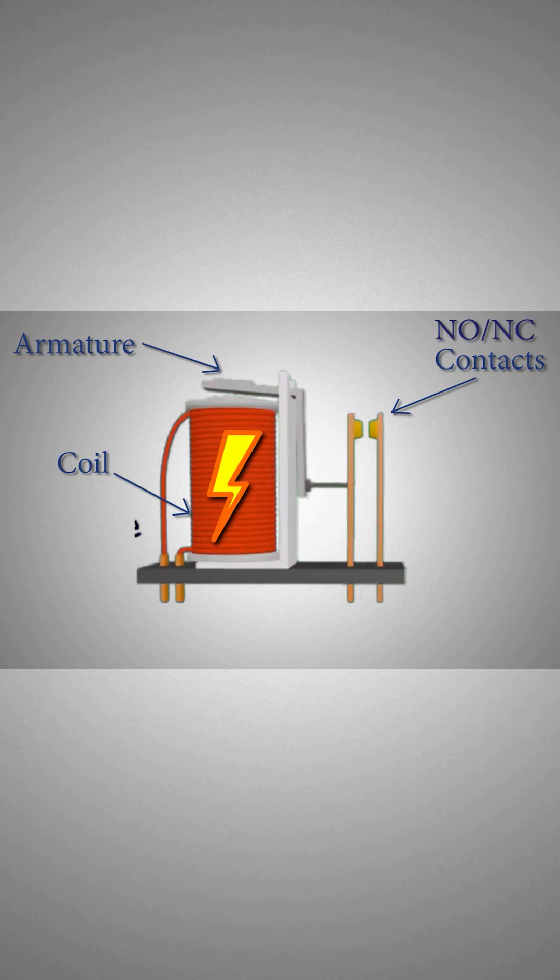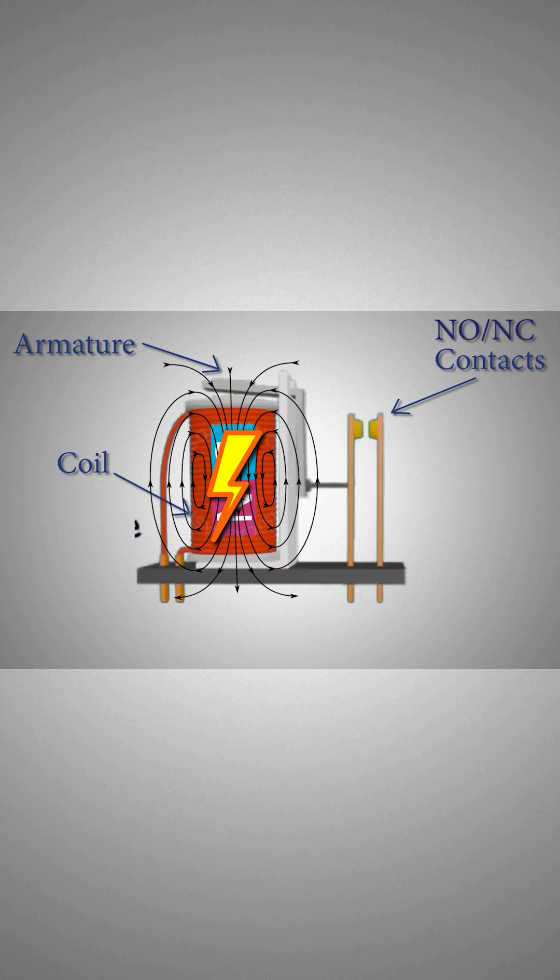When a coil is energized by applying voltage, it creates a magnetic field around the coil. We can say that it becomes an electromagnet.